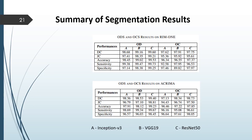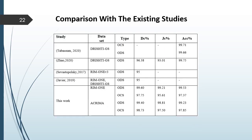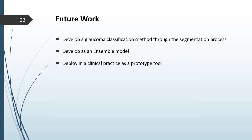Furthermore, optic disc segmentation with ResNet-50 on ACRIMA obtained 99.23% accuracy with the least testing loss. Moving on to the comparison with existing studies: one study obtained 99.71% accuracy for optic disc segmentation and 99.66% for optic cup segmentation on the DRISHTI-GS dataset. Zhao achieved 99.75% accuracy for optic disc segmentation on the DRISHTI-GS dataset, and also obtained 99.53% for optic disc segmentation using a different dataset. The proposed method also obtained 99.53% accuracy for optic disc segmentation on the RIM-1 dataset.